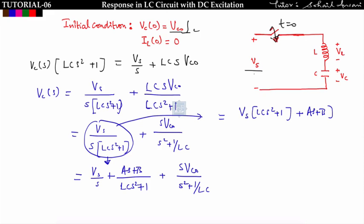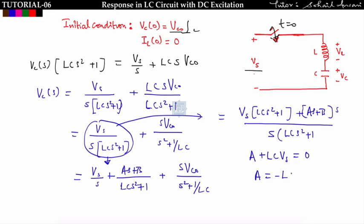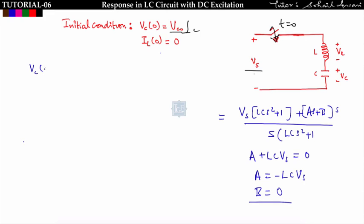To find constants A and B, equate the coefficients. The coefficient of s² gives: A plus LC·Vs equals zero, so A equals minus LC·Vs. To find B, equate coefficients of s, which gives B equals zero. Therefore: VC(s) equals Vs/s minus LC·Vs·s divided by [LC·s² + 1].